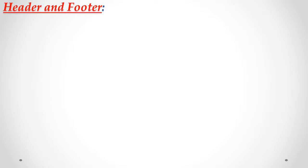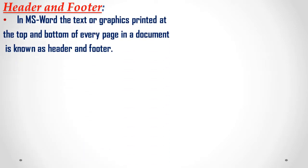First is about header and footer. In MS Word, the text or graphics printed at the top and the bottom of every page in a document is known as header and footer. If you want to see some text or graphic at the top of every page, that is known as a header. If you want to see the same text at the bottom of every page, that is known as a footer.